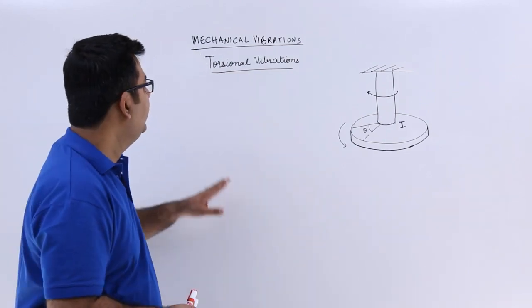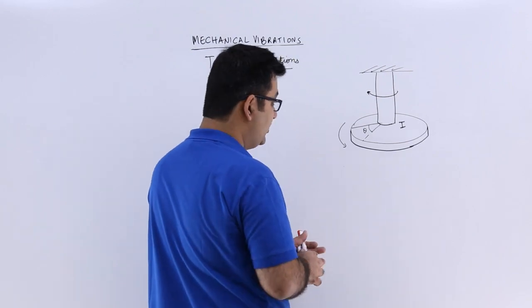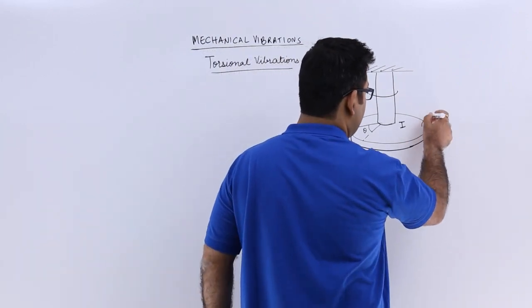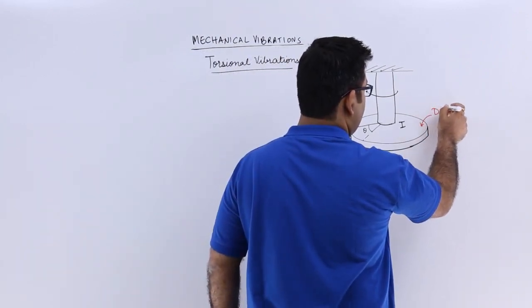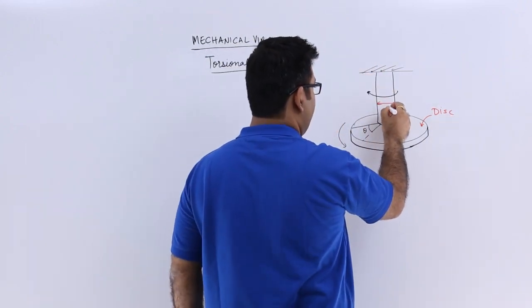Now let's talk about torsional vibrations. You see a disc over here. This is the disc. And then we have a shaft over here, let's say of diameter D.